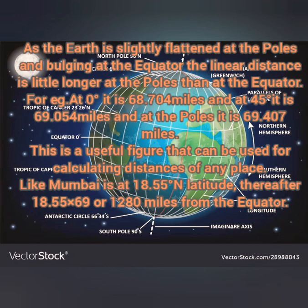The earth is slightly flattened at the two poles and bulging at the equator, so it's not a complete circle. Because of this, the linear distance between two latitudes keeps increasing as we travel towards the poles. At the equator, it is 68.704 miles, and when we travel towards the poles, it becomes 69.407 miles.